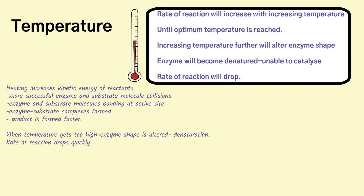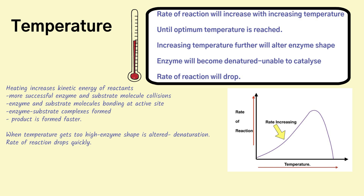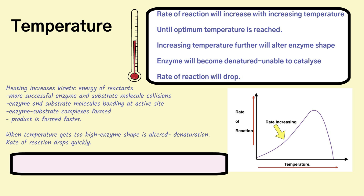When you increase the temperature or add heat, it increases the kinetic energy of the molecules — the reactants, the enzymes, and the substrate molecules — and they collide together more frequently, forming those enzyme-substrate complexes. This will continue until the optimum temperature is reached. The optimum temperature is the temperature at which the enzyme is catalysing at its fastest rate, and this graph is really important.